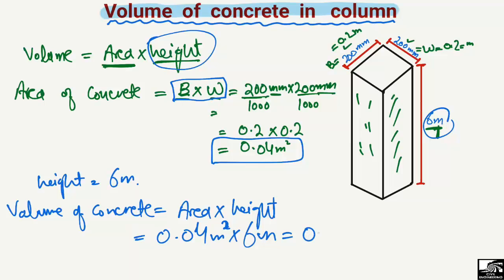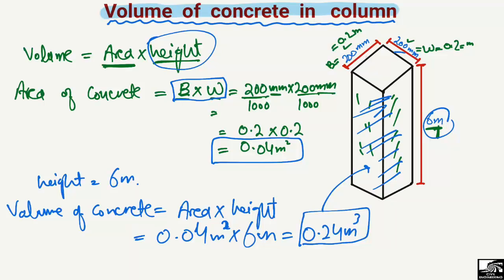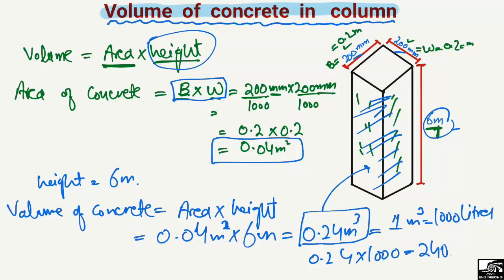Multiplying these two values, we get 0.24 cubic meters. So 0.24 cubic meters of concrete is required for this square column with dimensions 200mm × 200mm and height 6 meters. If we convert this into liters — since 1 cubic meter equals 1000 liters — we get 0.24 multiplied by 1000, which equals 240 liters of concrete.